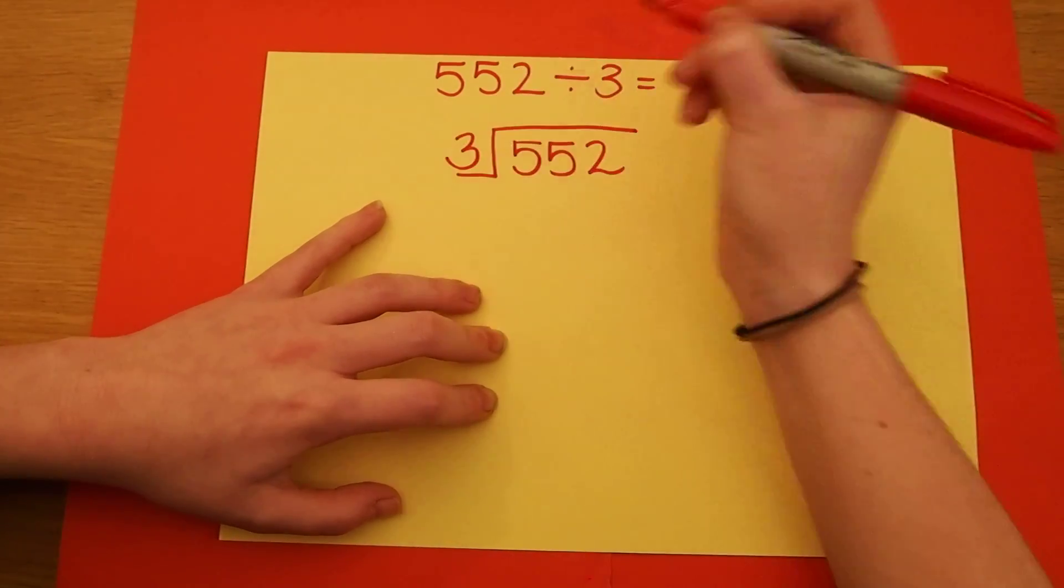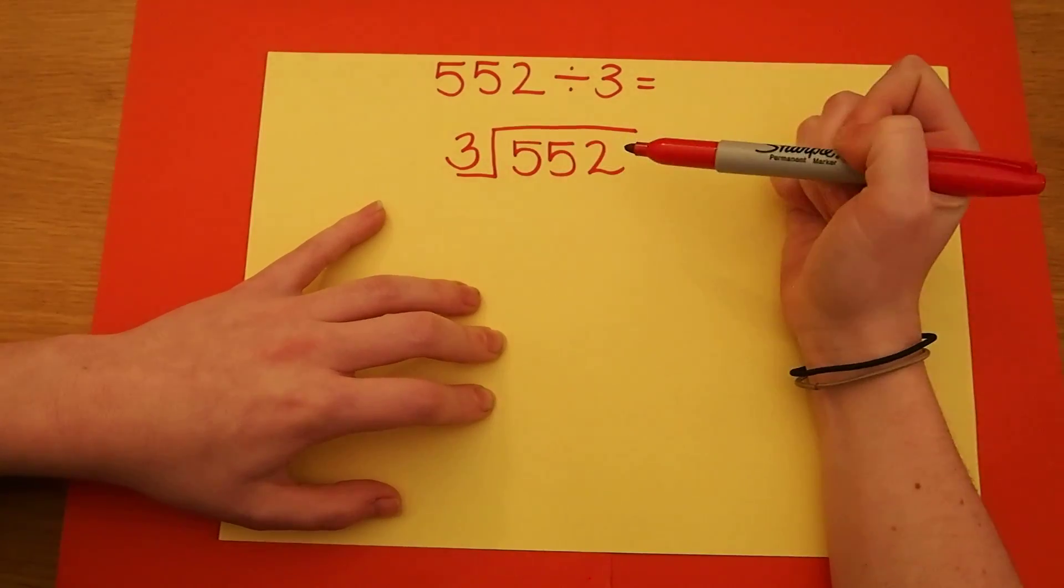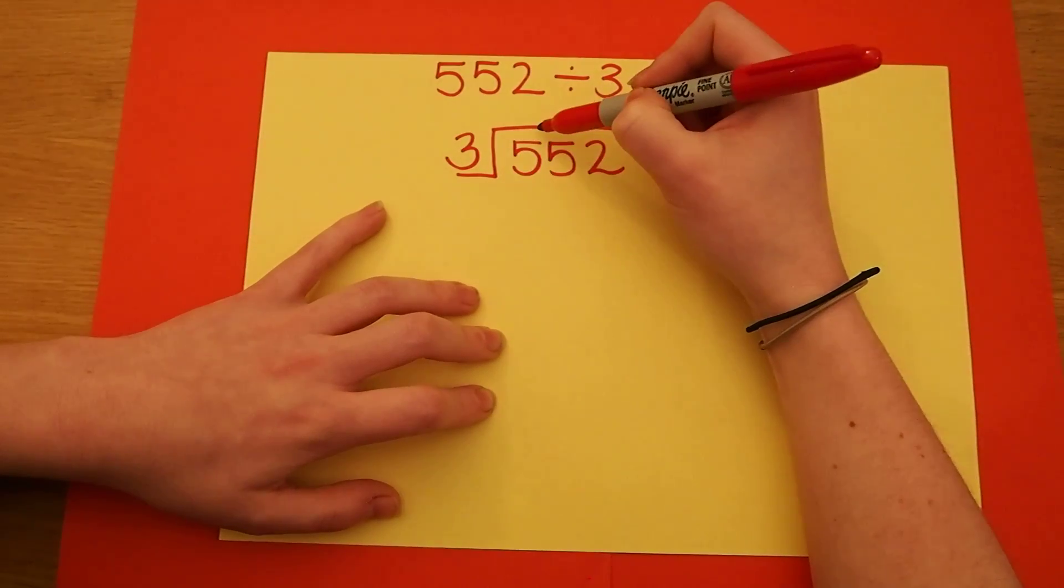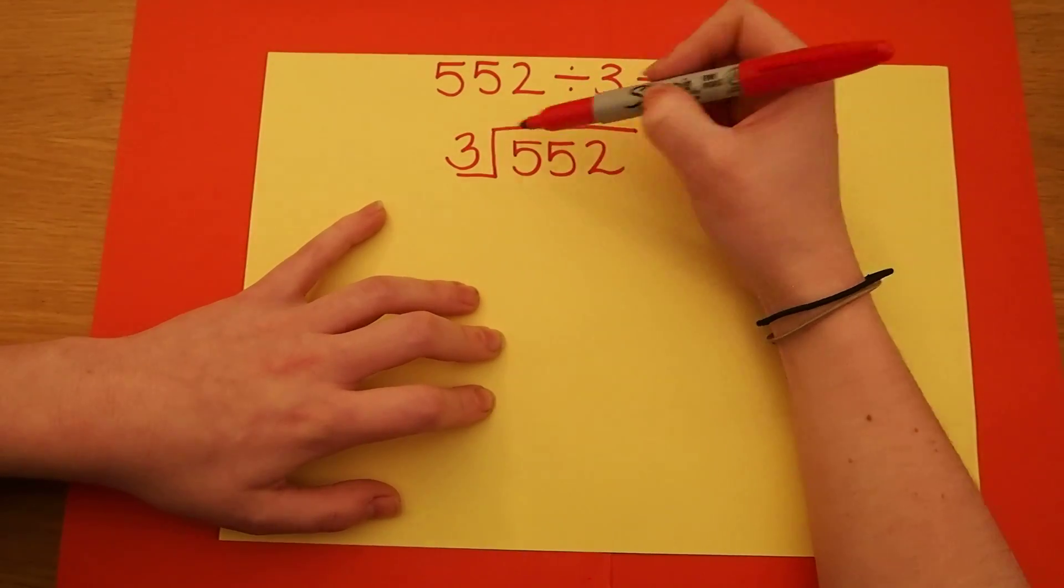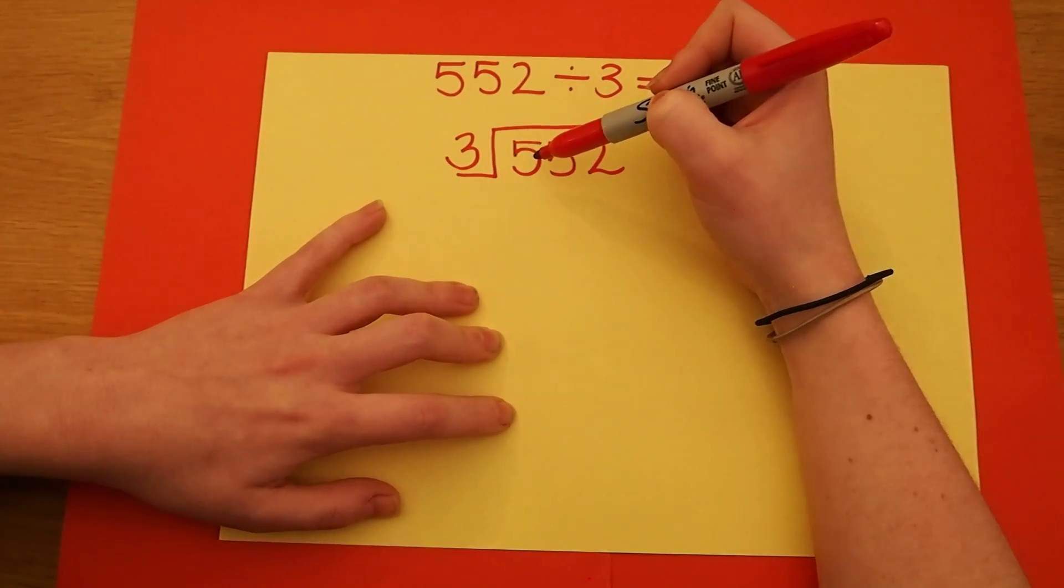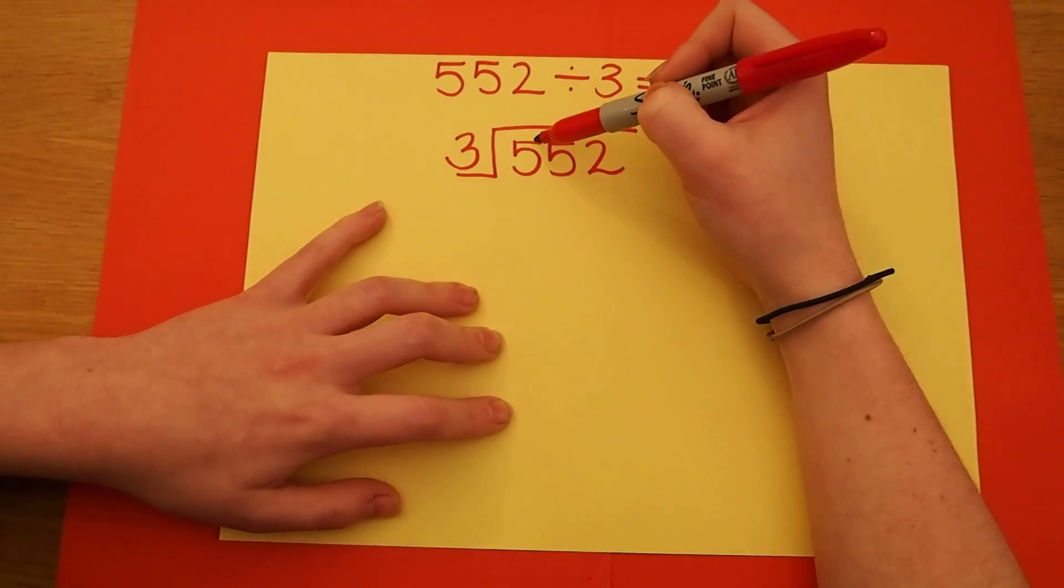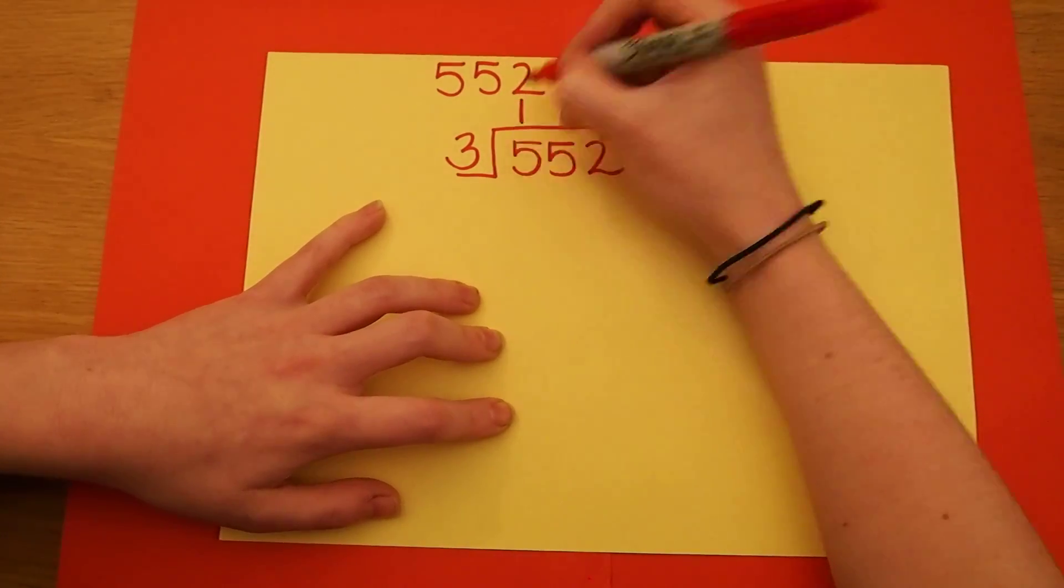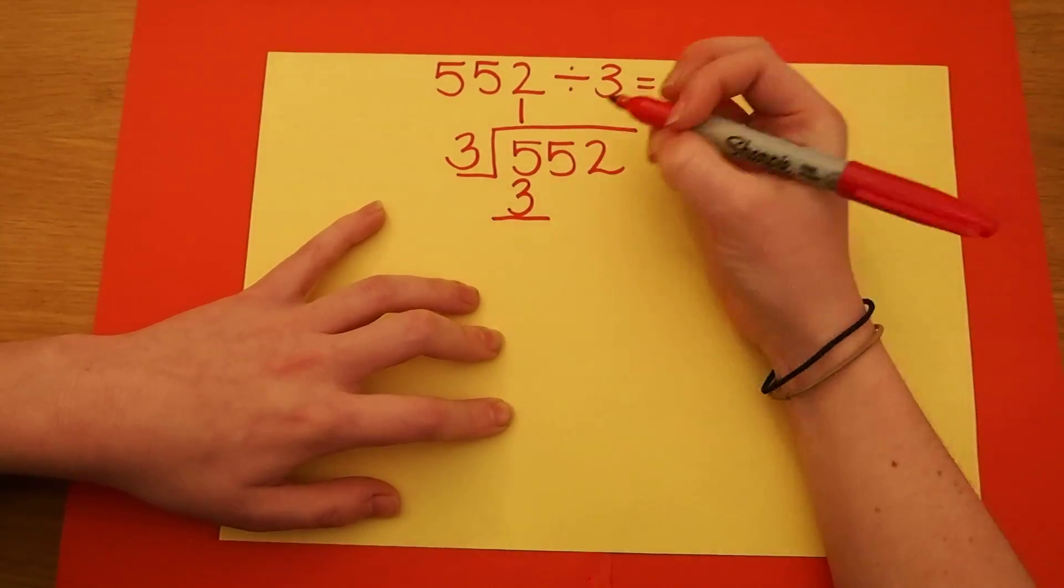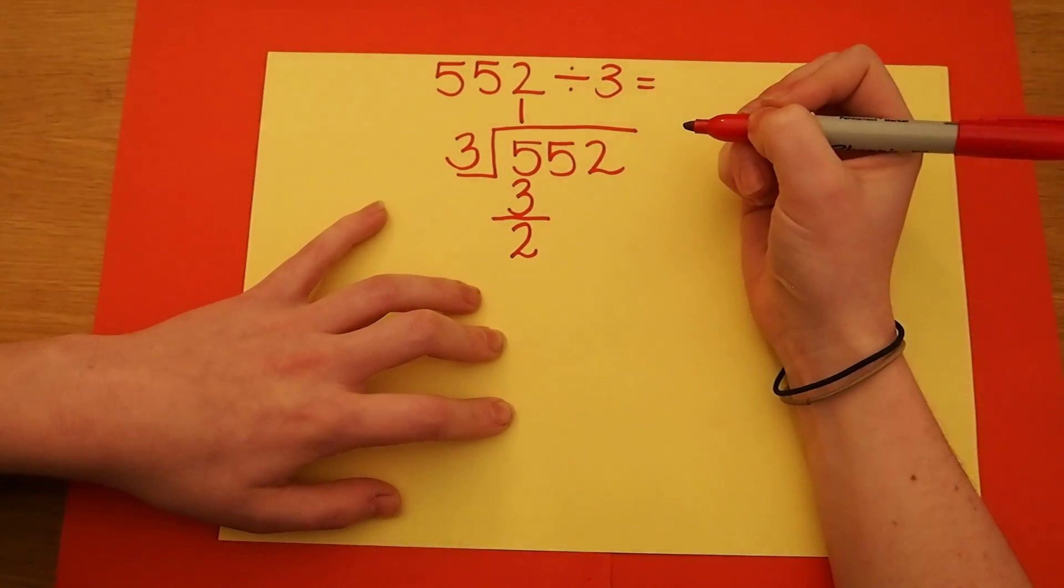I'm going to be using my 3 times table to help me divide. First, I look at the first 5. How many 3's go into 5? Using my 3 times table, I know that 3 times 2 is 6. I only have 5, so that's too many. 3 times 1 is 3. When I take the 3 away from the 5, I get left with 2 as a remainder.